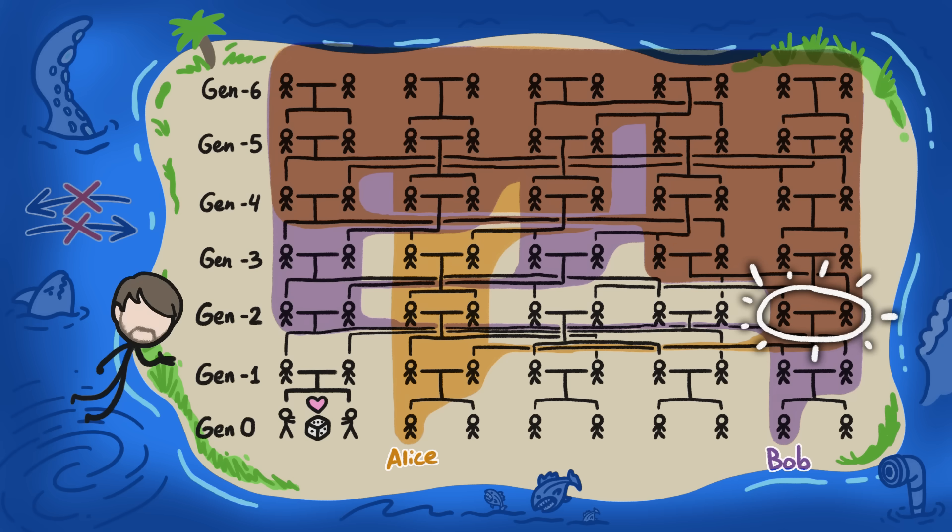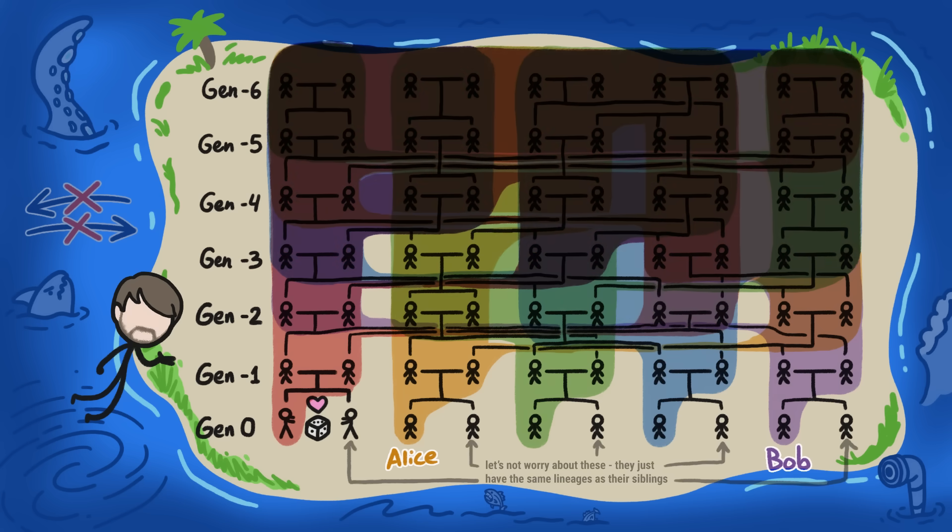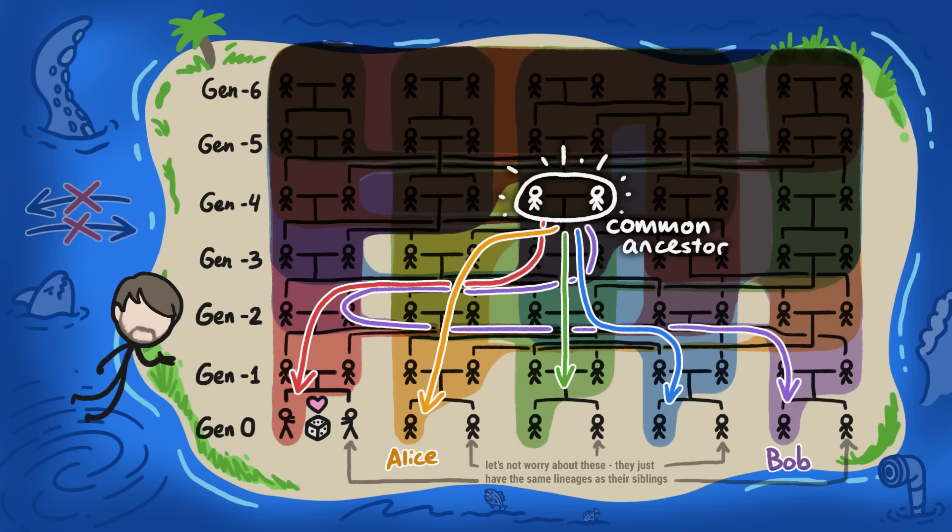In this case, since the overlap first happens in Gen minus 2, that would make them cousins. When we trace the parental lineages of everyone in Gen 0, we only have to go to about Gen minus 4 before we find a place where all the lineages touch. That is, we find someone who is related to everyone in Gen 0.